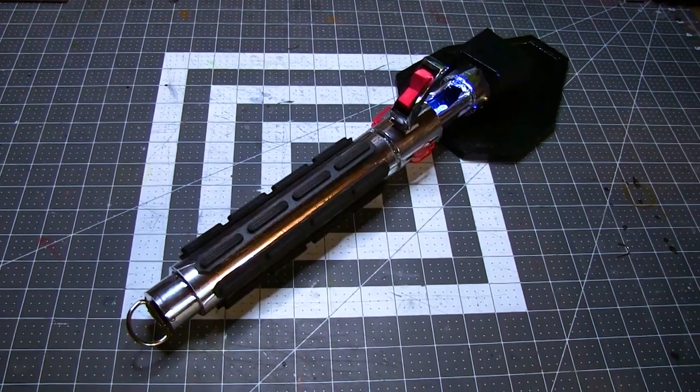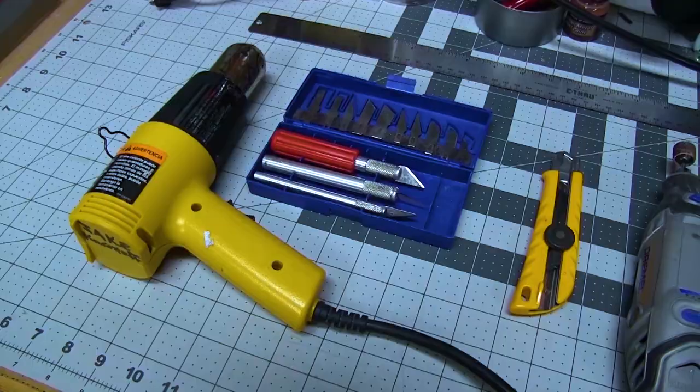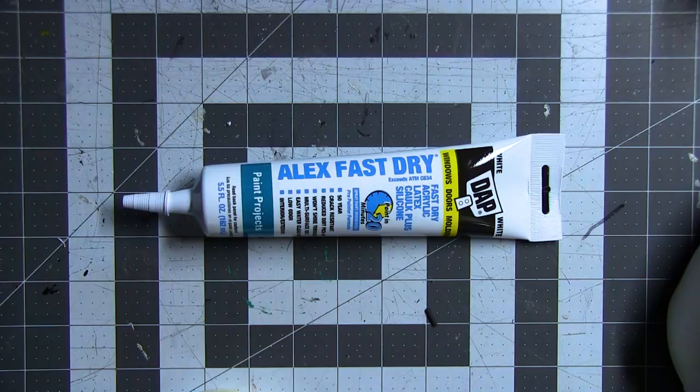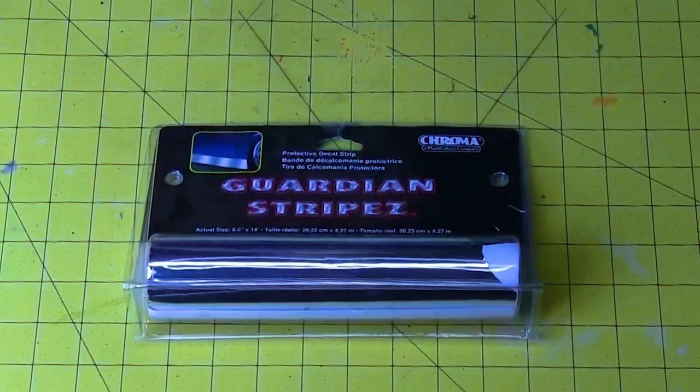Today I'm making one of the lightsabers from Star Wars Visions. For this build I used craft foam, putty, super glue, foil tape,